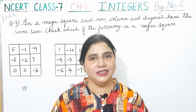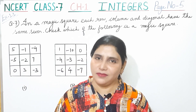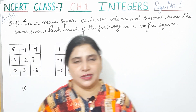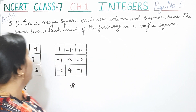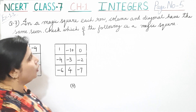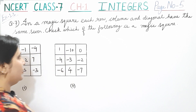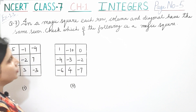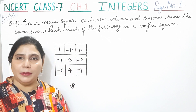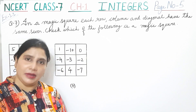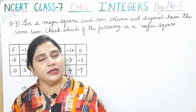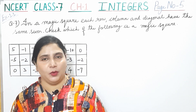This is question number 7 of exercise 1.1 of NCERT class 7 chapter 1 integers. This question says: in a magic square, each row, column and diagonal have the same sum. Check which of the following is a magic square. We have two squares given. A magic square is one where the row, column and diagonal sums are all the same.